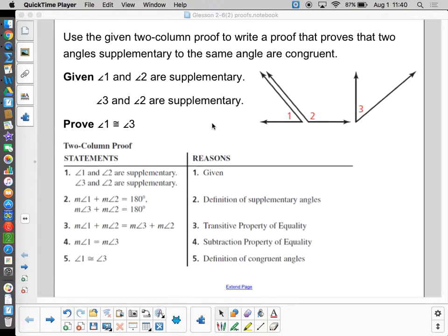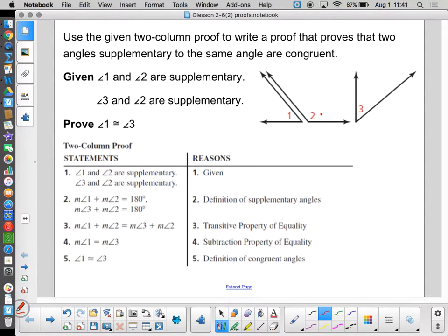What we're looking at today is an example proof of the congruent supplements theorem. We talked through this and we've looked at it, but now we're going to formally prove it. And it's pretty straightforward. We start with our givens and what we're trying to prove, as well as a diagram. We're given that angle 1 and angle 2 are supplementary, and angle 3 and angle 2 are also supplementary. We want to prove angle 1 is congruent to angle 3.